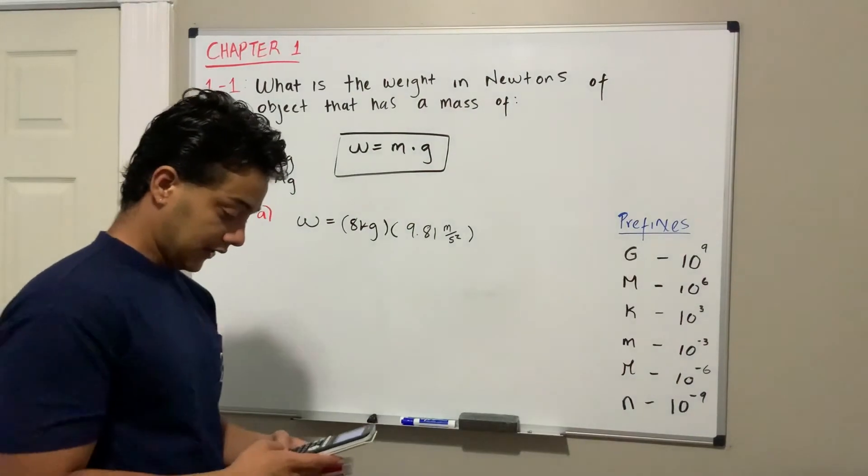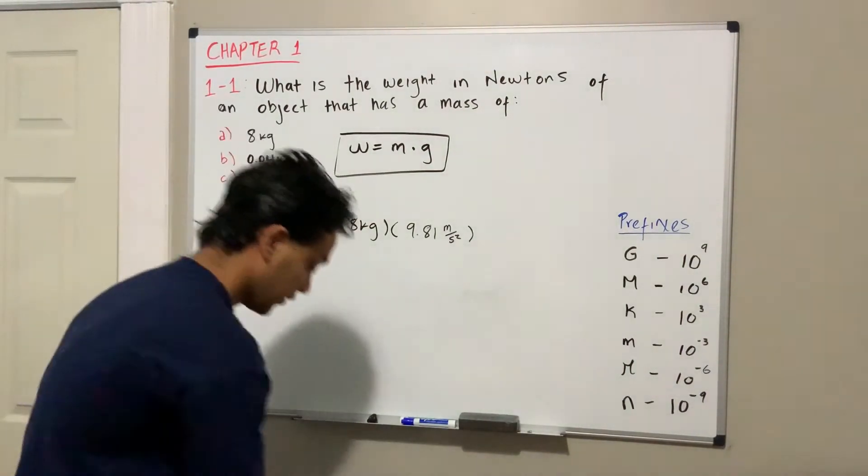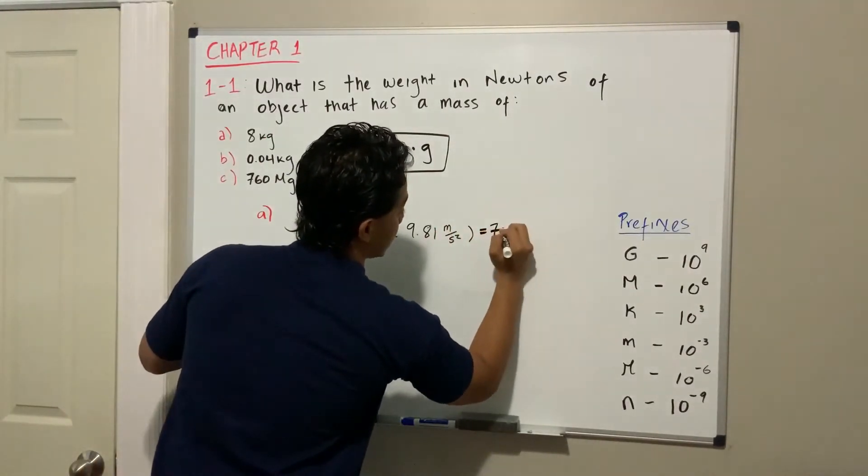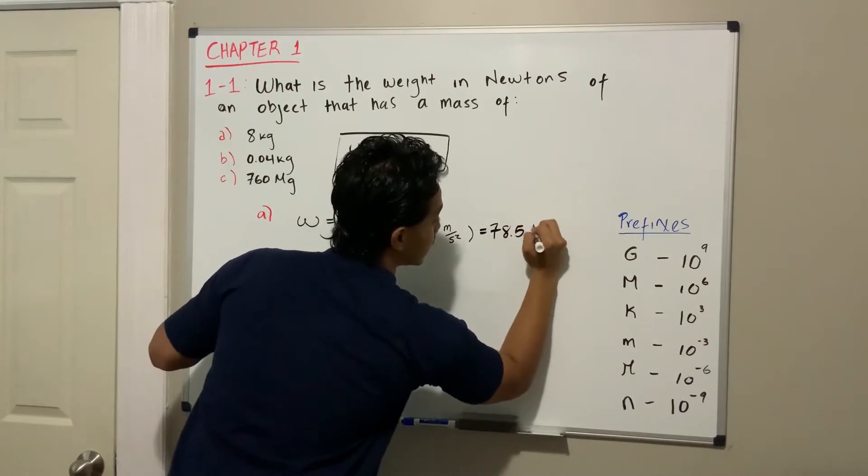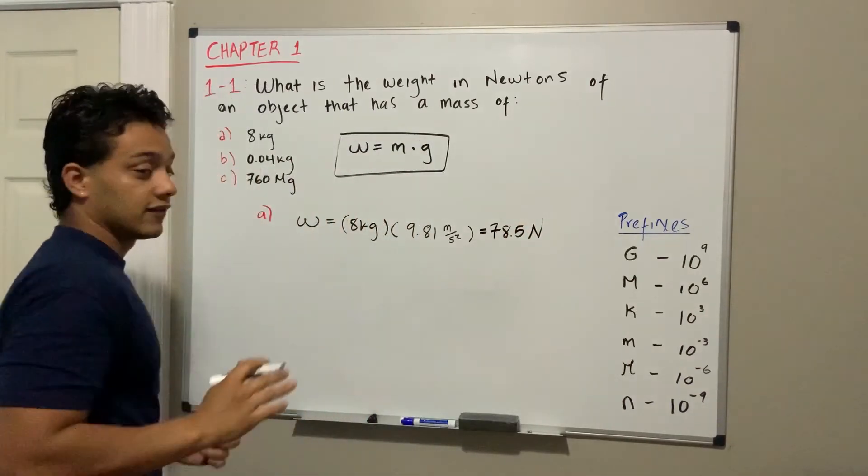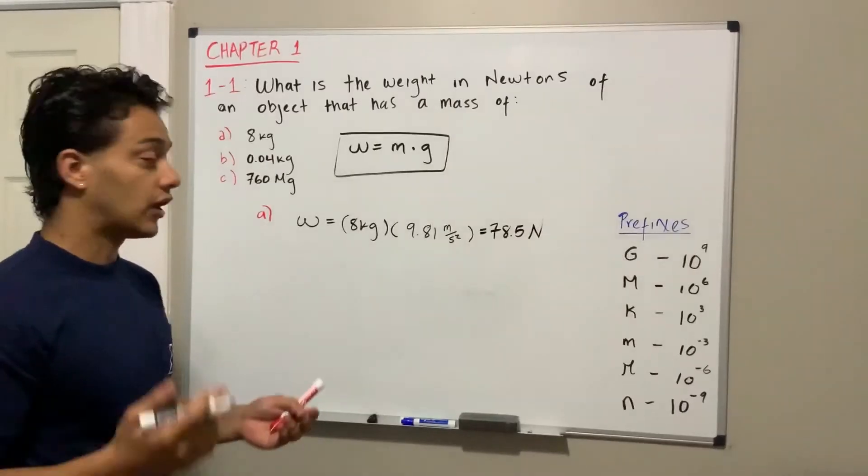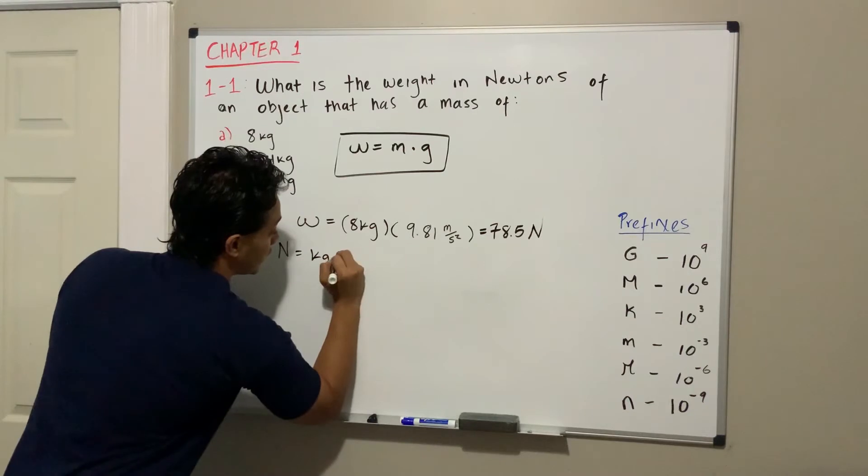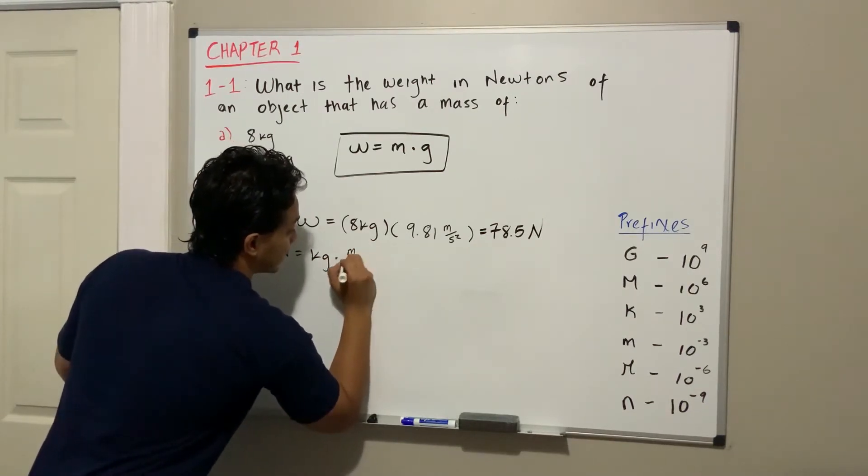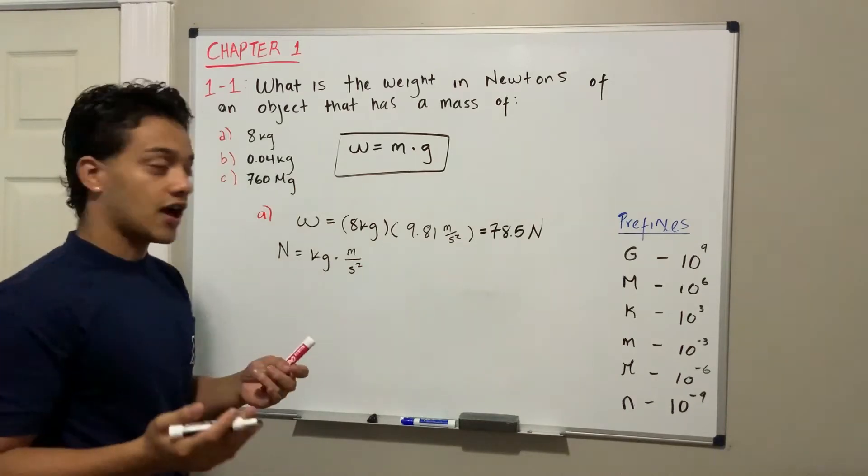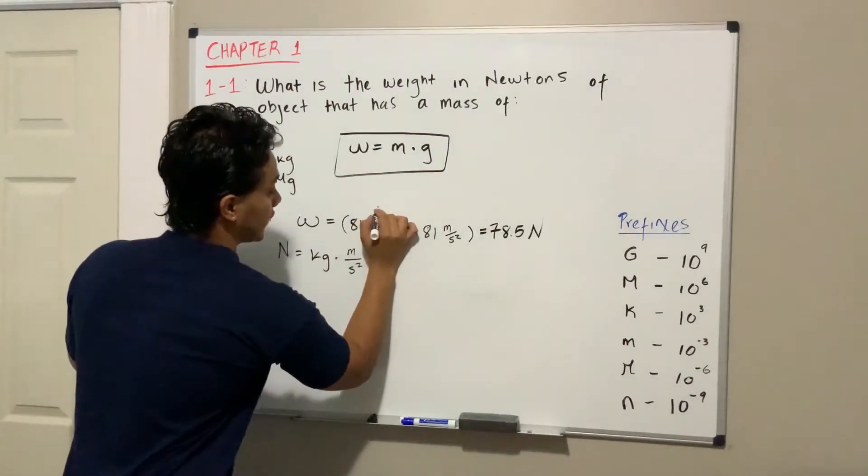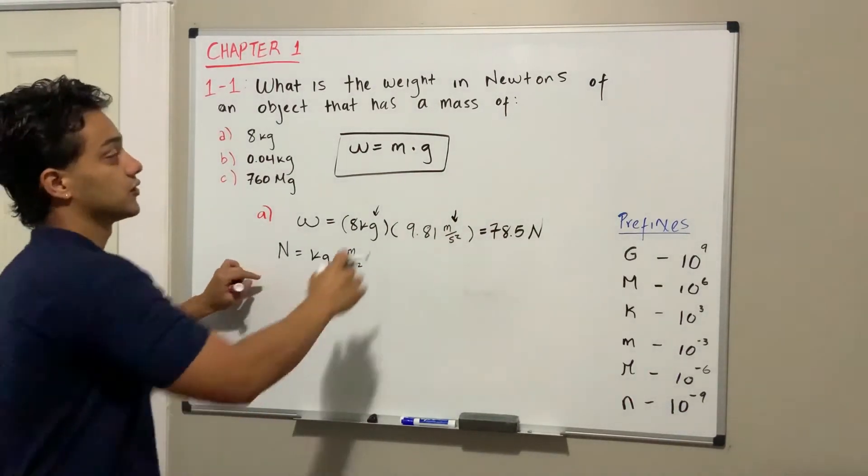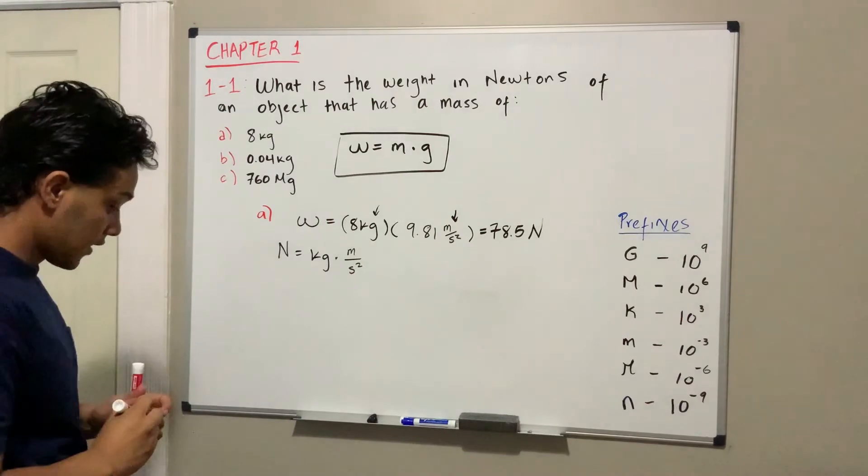If we use our calculator, 8 times 9.81 equals 78.5 newtons. Just in case somebody doesn't know what a newton is, a newton is actually equal to a kilogram multiplied by meters per second squared, which is actually the unit we have over here. So we're good, we found it in newtons, which is what they wanted us to find.